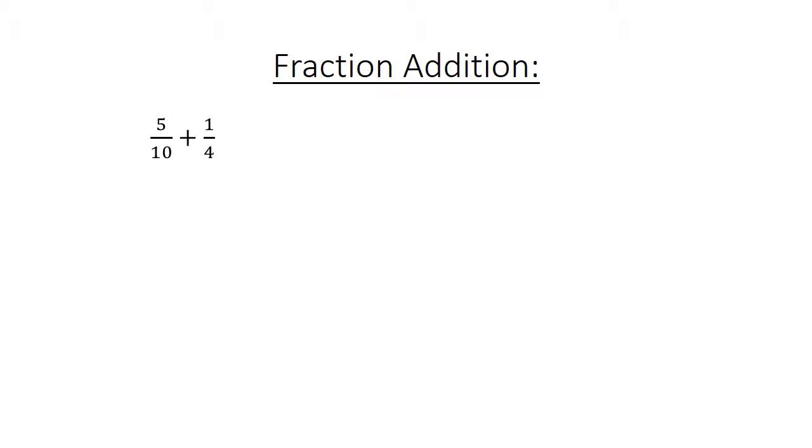Fraction addition: 5 over 10 plus 1 over 4. Find the lowest common multiple, 20. 10 over 20 plus 5 over 20 equals 15 over 20 equals 3 over 4.